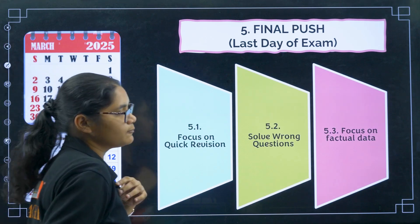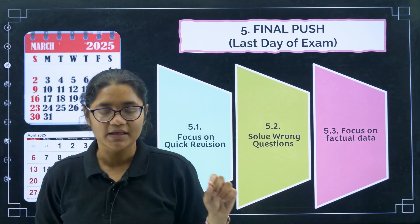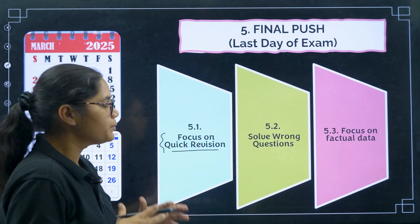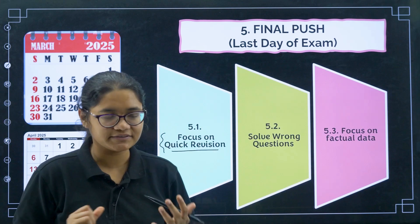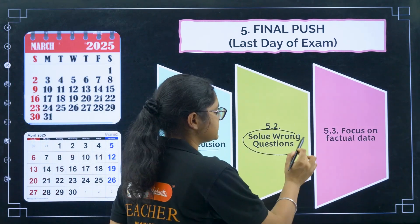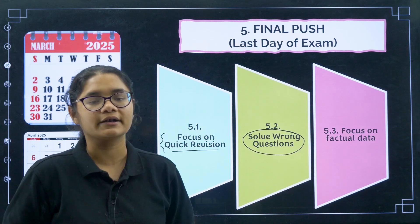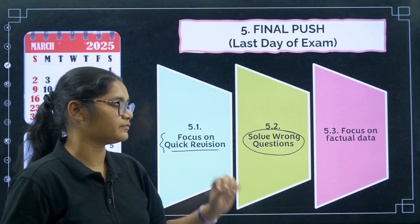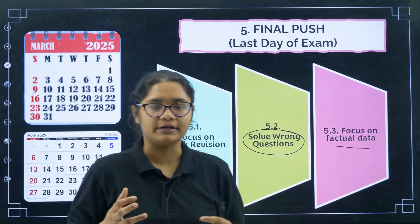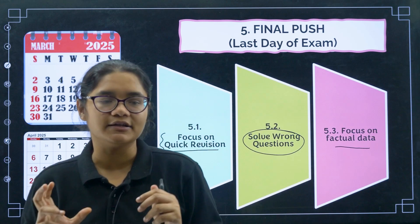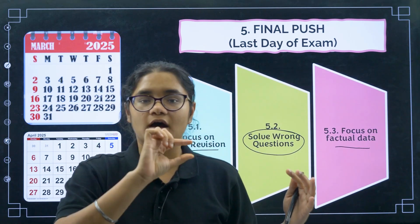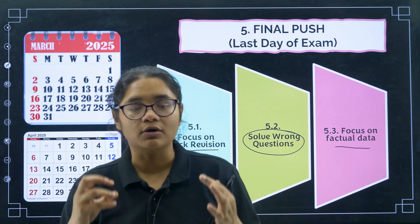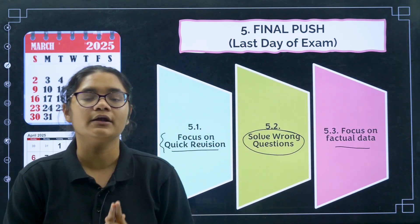Coming to the final push — the last one day before the exam. At this point you should focus on quick revision of the concepts. After that, solve all the wrong questions you got during previous year papers, mock tests, and model papers — make a list of those and revise them on the last day. And lastly, focus on factual data: some constant values in physics, important terms in biology — just have a look at those important constants and values that need to be remembered.